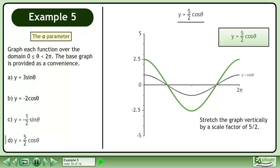Stretch the graph vertically by a scale factor of 5 over 2 to get the graph of y equals five-halves cos θ.